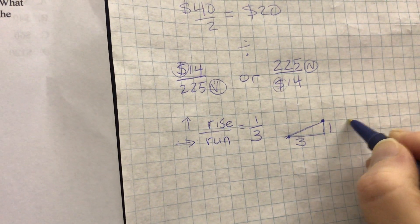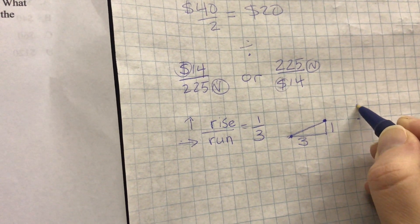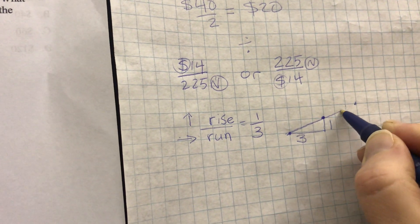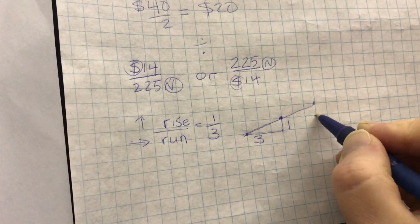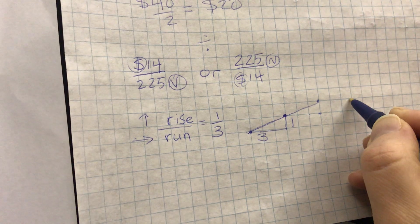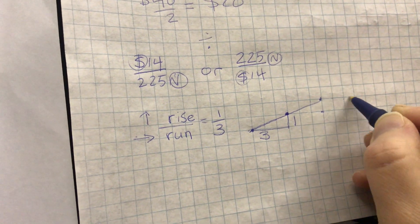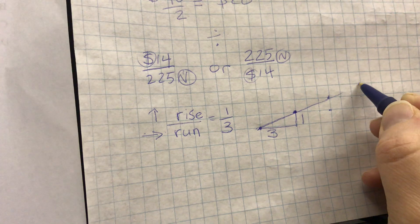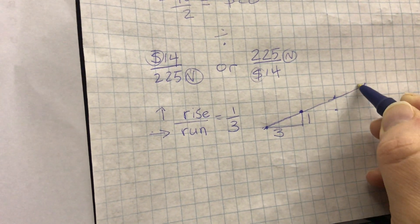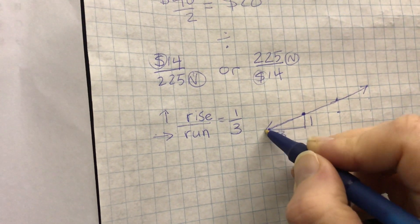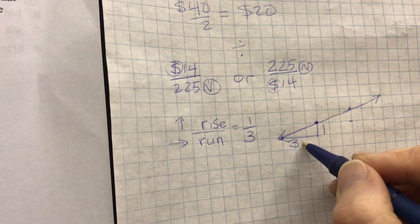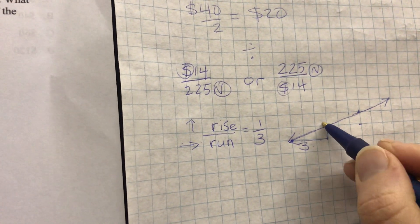And I can keep doing this. One, two, three over and one up. This is going to be the next point in my line. One, two, three over. Oh, sorry. One, two, three over and one up. And my slope will go on. Really, if it's a line, it goes on to infinity in both directions. So this is the slope, three across and one up.